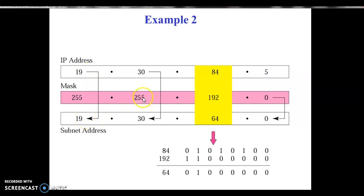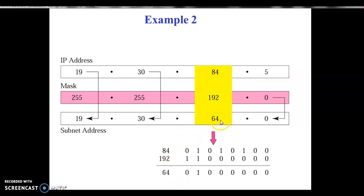Where the mask byte is 0, we copy 0 for that byte. Where the mask byte is 192 — neither 255 nor 0 — we convert both the IP address byte (84) and 192 into binary and perform the AND operation. The result of ANDing 84 and 192 in binary gives us 64. So the subnetwork address is obtained: if the mask byte is 255 copy the IP address, if 0 copy 0, otherwise convert to binary and AND.